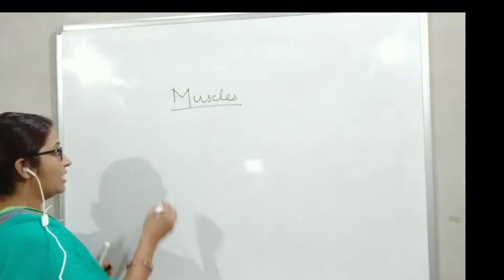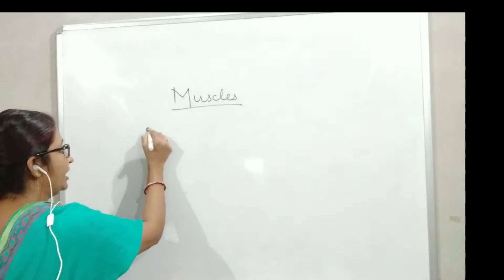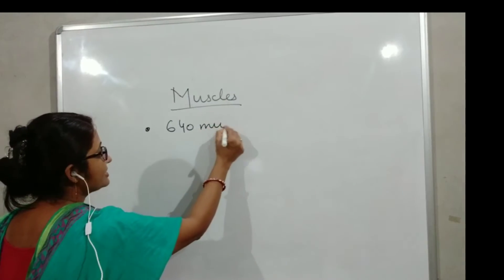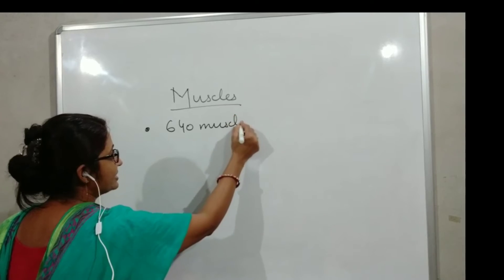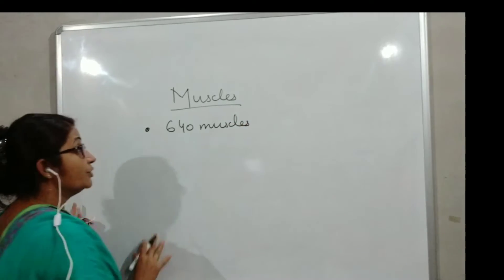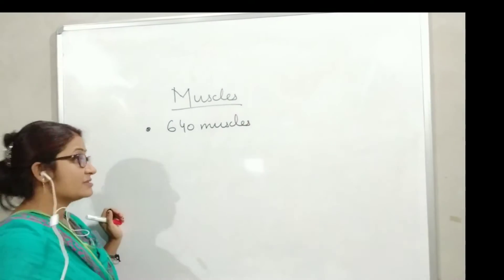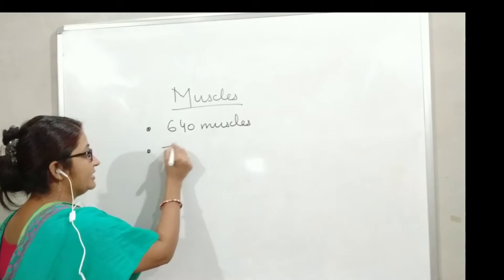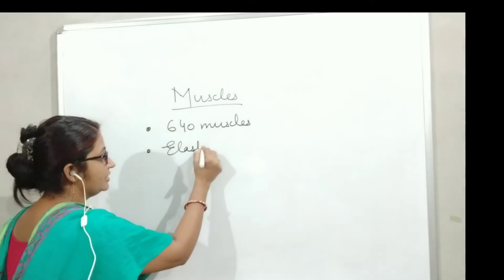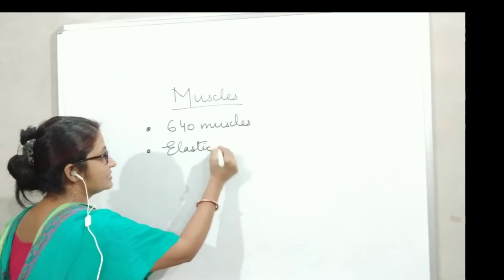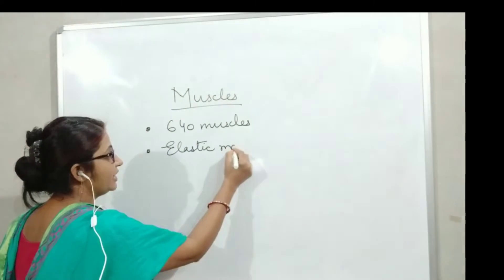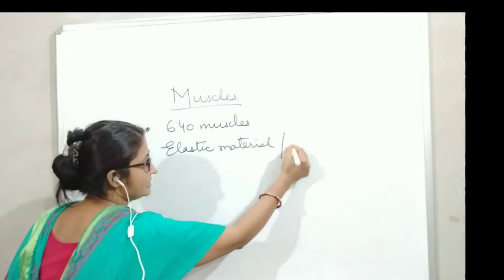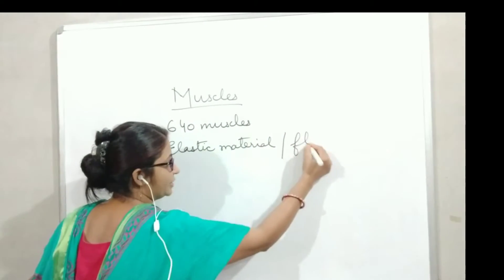So how many muscles are there? 640 muscles are present in a human body. They are made of elastic material — we can say they are fleshy.